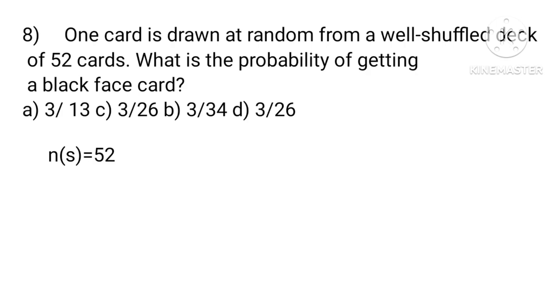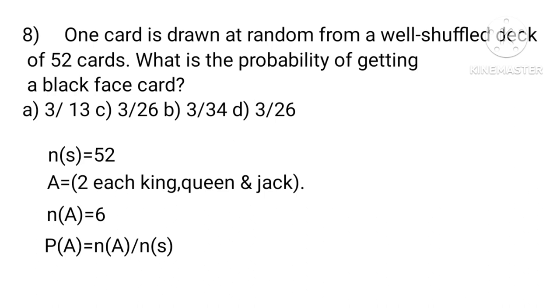N S equals 52. Let A equals getting black faced cards equals 2 each king, queen and jack. N A equals 6. Therefore, P A equals N A upon N S equals 6 upon 52 equals 3 upon 26.